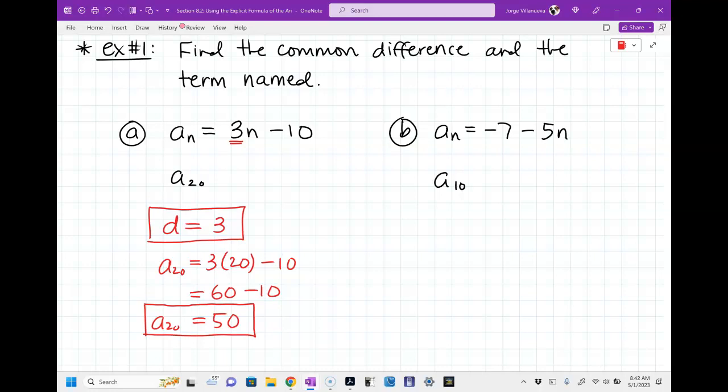So, for part B, what's my d value? Negative 5. So, good. It's right here. Negative 5. And, a sub 10 will be negative 7 minus 5 times 10. And then just simplify that. So, 5 times 10 is 50. Remember, you've got to multiply it before you add or subtract. So, this is negative 50 total. And negative 7 minus 50 is negative 57. That's a sub 10. So, here are your two answers that they're asking for.